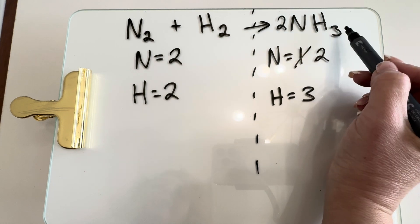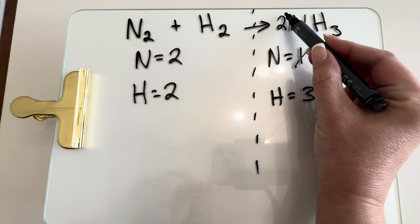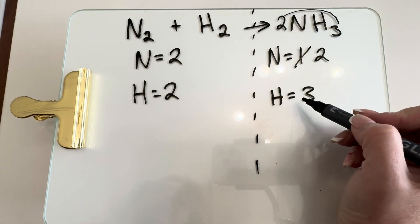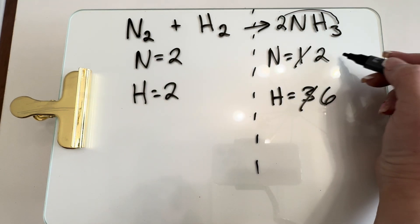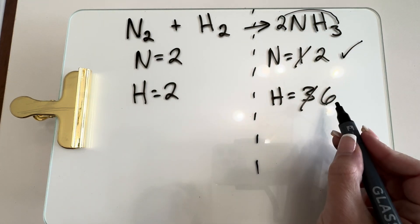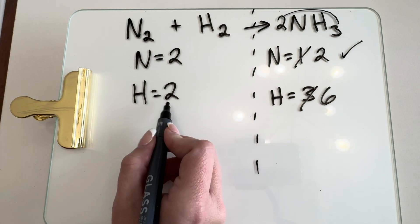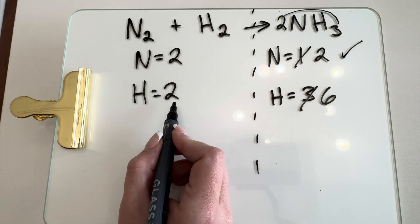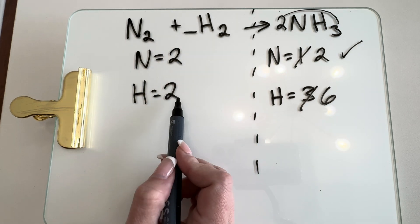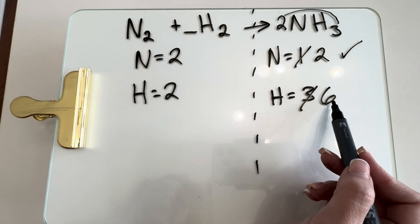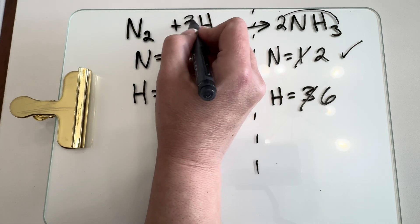But this two also affects our hydrogen. If we distribute that two to three, two times three gives us six. So our nitrogens are balanced but our hydrogens are not. We need to come back to our reactant side and put a coefficient so that two times something equals six, and that's going to be a three.